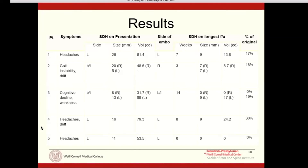It makes sense because when you embolize the arteries, you're interrupting that vicious cycle of re-bleeding, and then it takes time for the body to resorb the blood — like it does any other bruise or bleed — which typically occurs by the four to six week mark. It's important to counsel these patients that during that time period, if they decompensate, they still may ultimately need surgery. This procedure doesn't preclude them from getting that, but given the fact that most subdural hematoma patients present progressively but insidiously, we oftentimes have that window of six weeks to do this procedure and have them turn the corner.